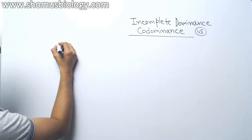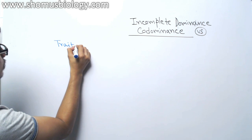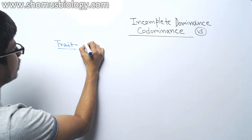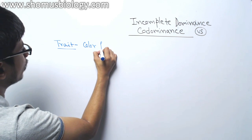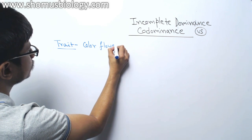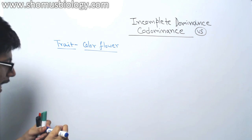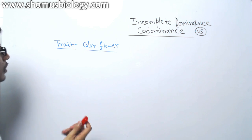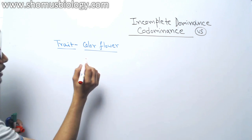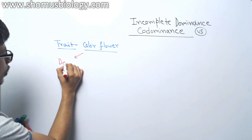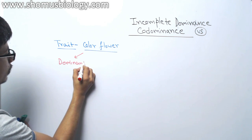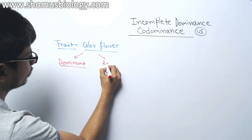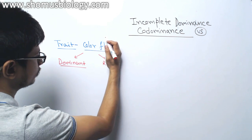For example, here we are talking about one trait and the trait we are talking about is the color of the flower. Flower color and the gene responsible.